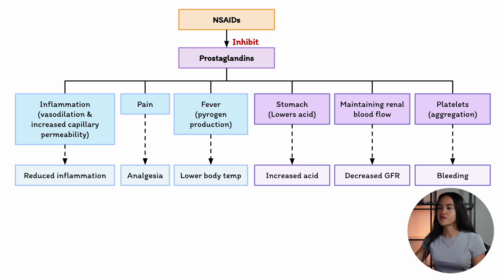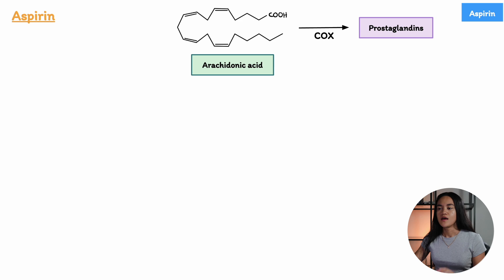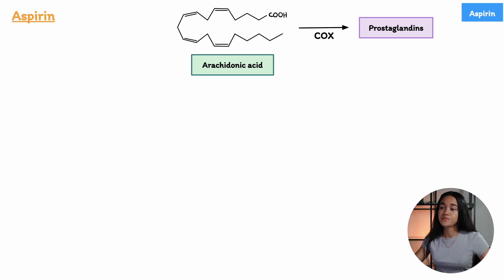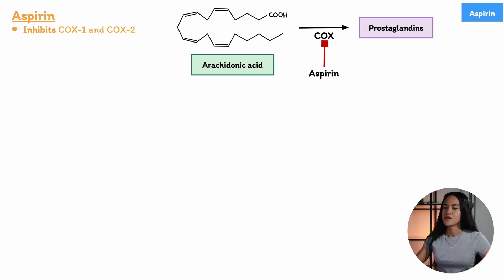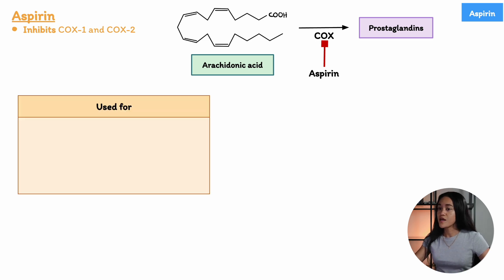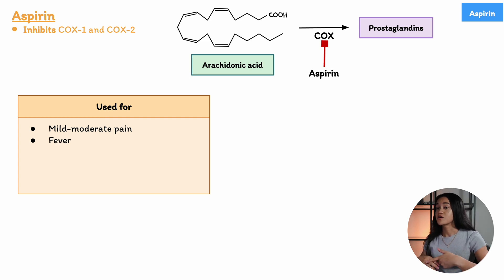Let's go through some specific non-steroidal anti-inflammatory drugs, starting with aspirin. Aspirin is one of the oldest and well-known NSAIDs. It's a non-selective cyclooxygenase inhibitor, meaning it blocks both COX-1 and COX-2 enzymes. Aspirin is widely used for pain relief — treating mild to moderate pain — fever reduction, inflammation control, as well as prevention of blood clots.